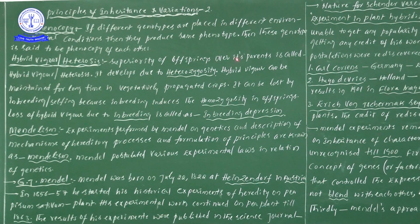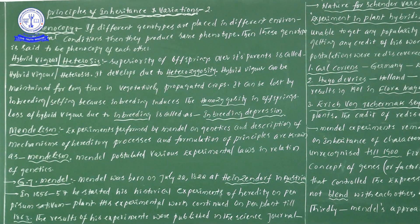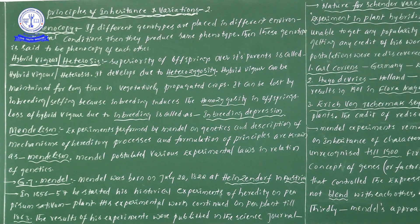In plant breeding, two parents are taken. These two parents have different characters — for example, one parent is disease resistant and another has high-yielding capability. When we perform cross hybridization, the offspring will get both parental characters. So this particular offspring, when compared to both parents, has superior qualities because both parents had individual characters but the offspring has two parental characters.